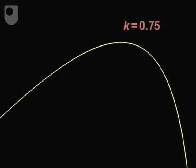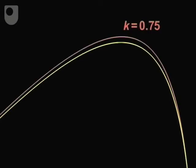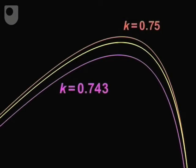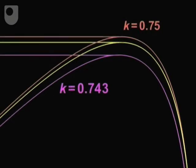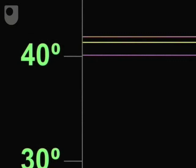The value of k for red light is 0.75. That gives this graph. The value of k for violet light is 0.743, giving rise to a slightly different graph. The maximum value of y for red light is about 42 degrees. But for violet, it's only just over 40 degrees.